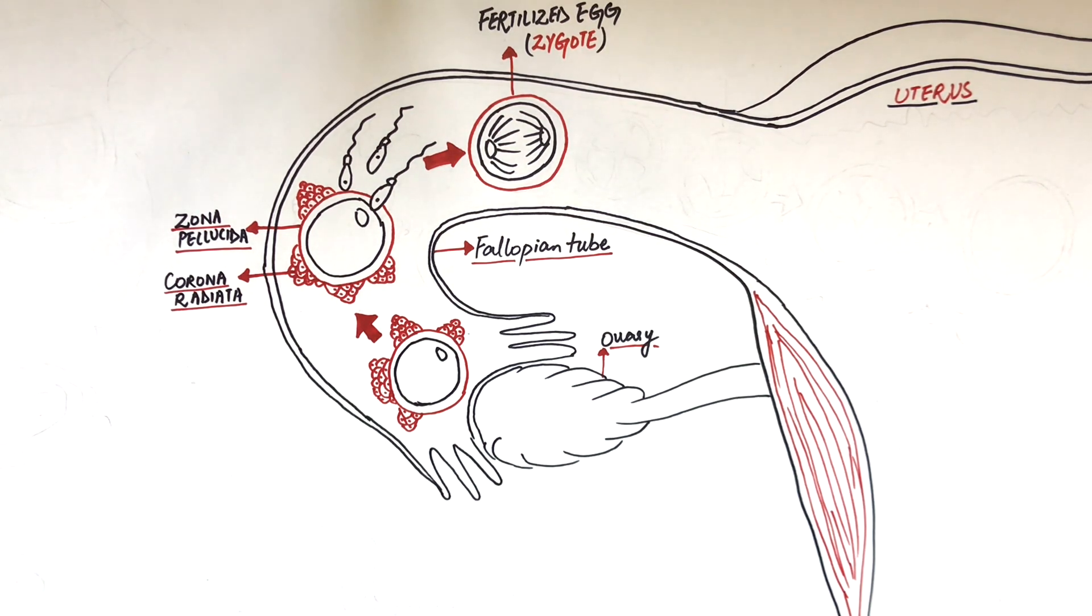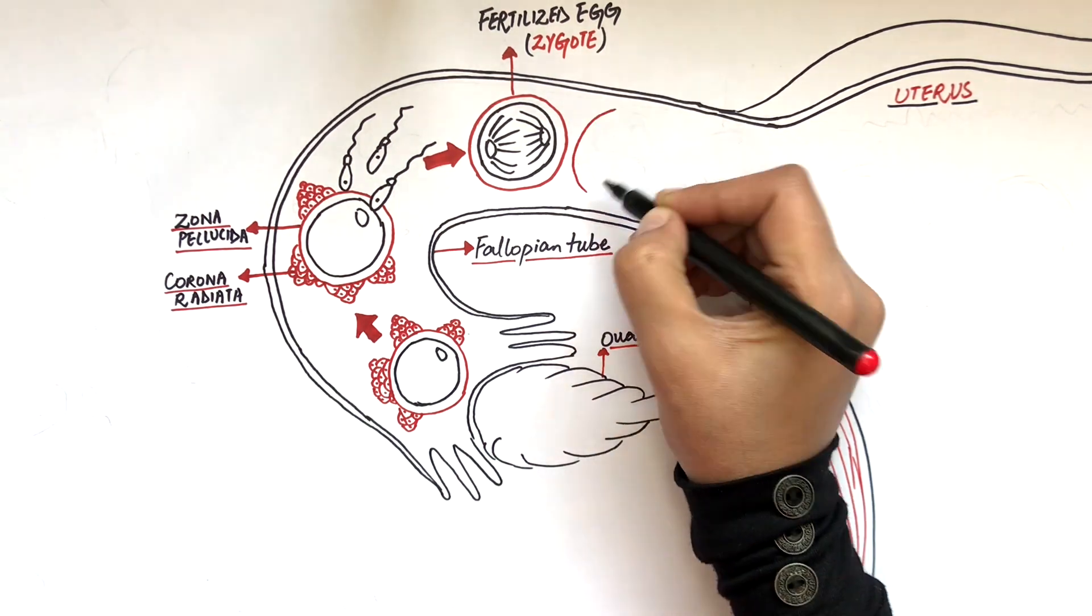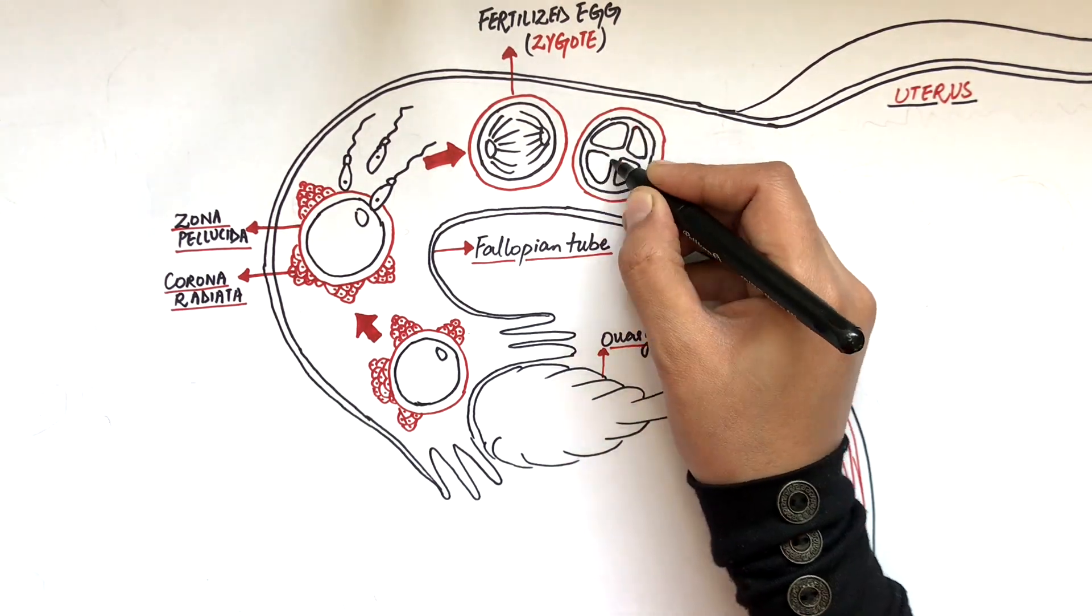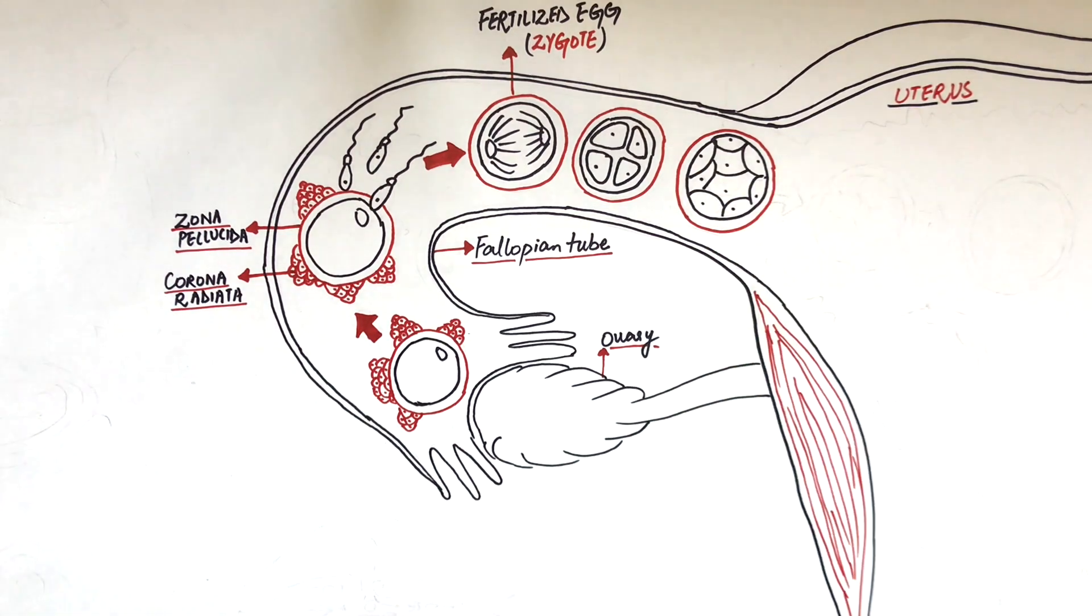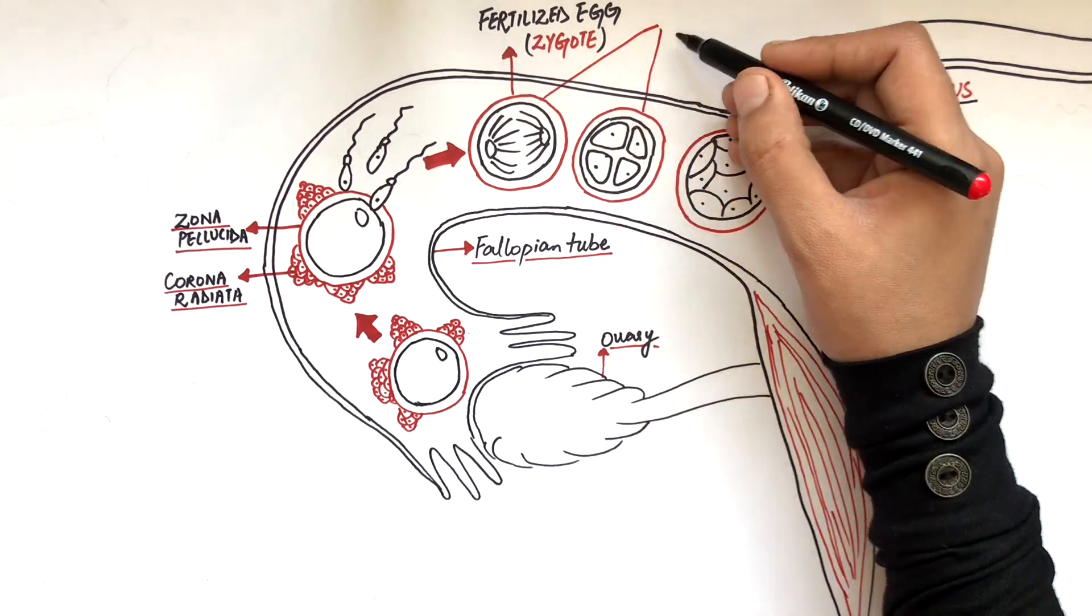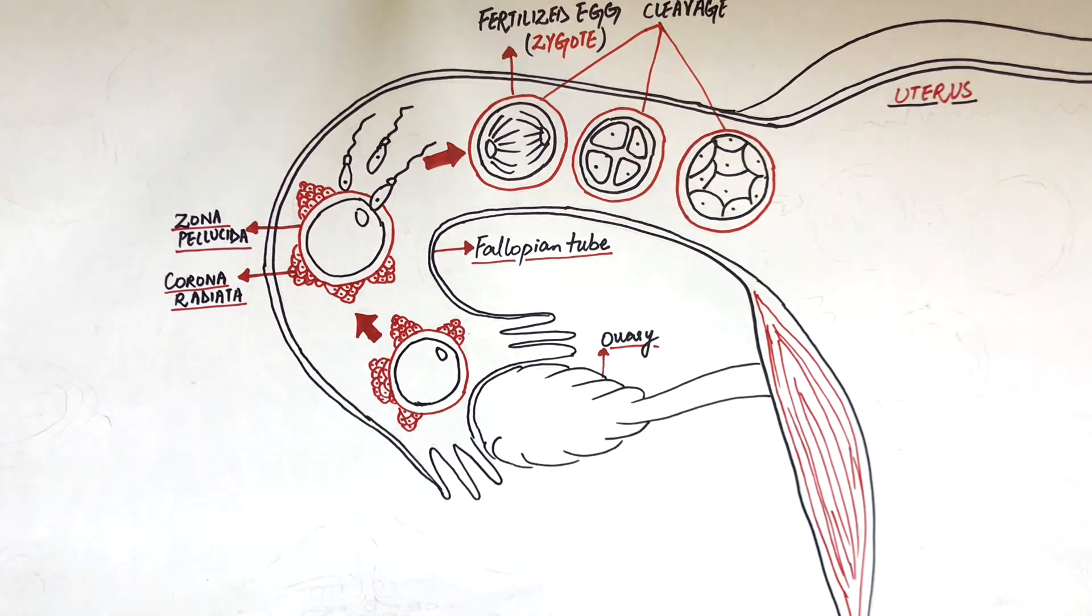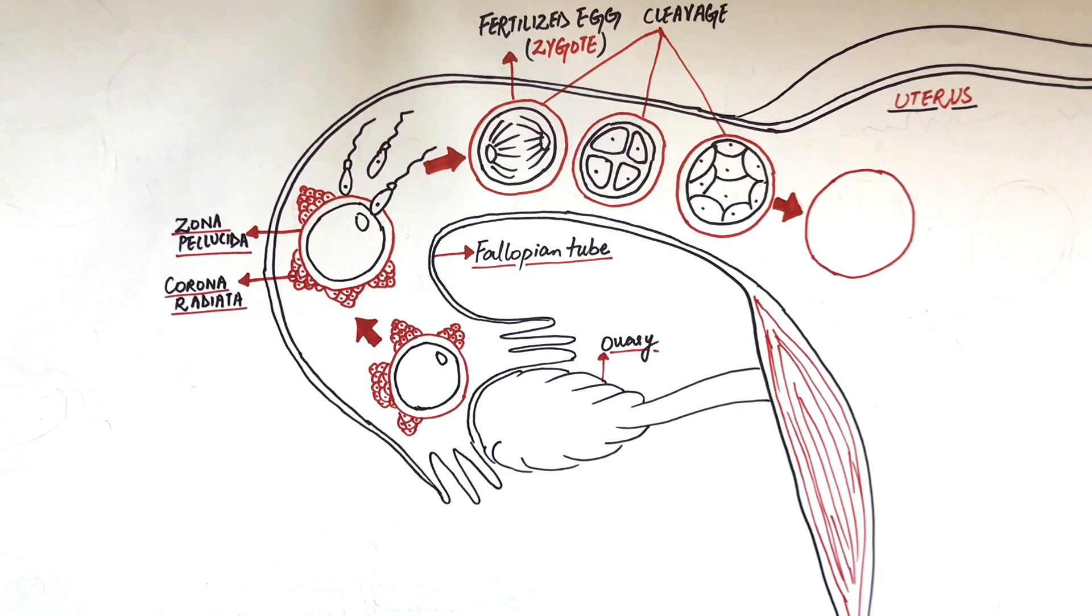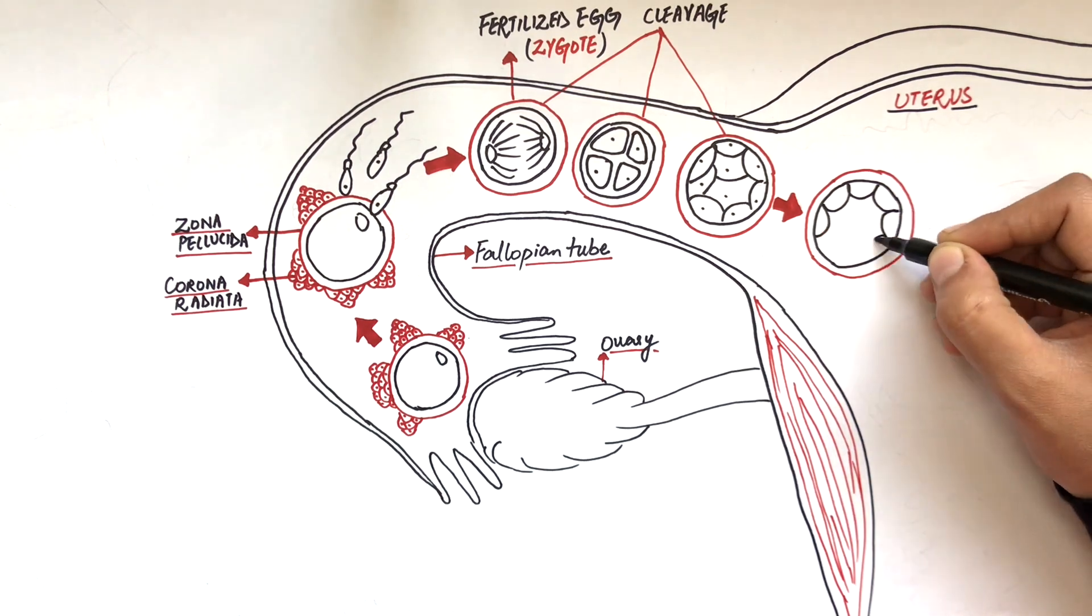This fertilized egg or zygote will undergo a series of cell divisional stages and will convert into a two-cell, then four, and then eight-cell mass. These cell divisional stages are called the cleavage stages. As the eight-cell mass grows further through cell division, it converts into a morula, which is a 16-cell mass.